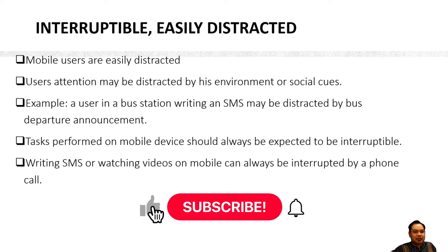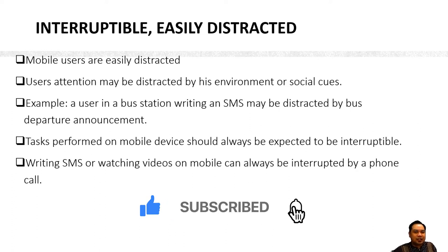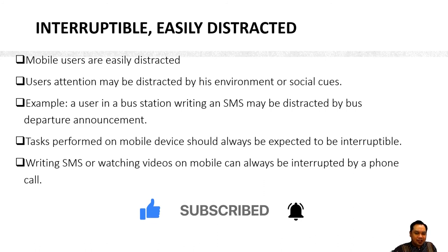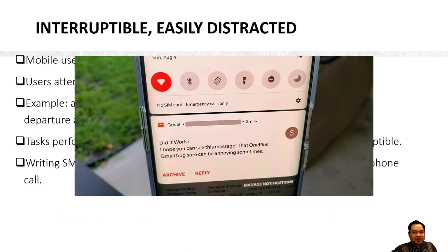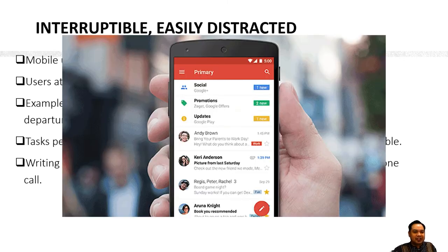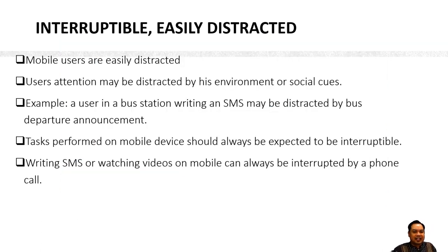Another example: when a user is writing a message in WhatsApp, they might be interrupted by a phone call or an email notification. The user may decide to go to the email application to read an important email. The messages inside WhatsApp need to be saved so the user can continue writing when they are done reading the email or answering the phone call.